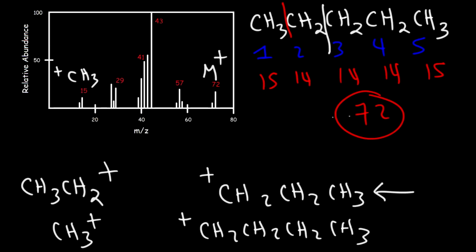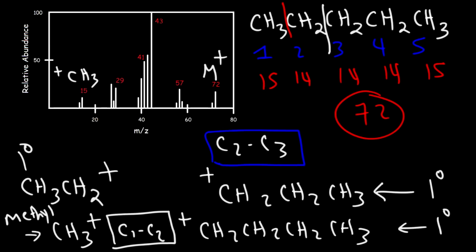In the first scenario where we break the C2-C3 bond, notice that we have a primary ethyl cation and a primary propyl cation. In the second situation where we break the C1-C2 bond, we have a primary butyl cation and a methyl carbocation. A methyl carbocation is less stable than a primary carbocation, which means it's easier to break the C2-C3 bond as opposed to the C1-C2 bond because this will give us more stable fragments, and that's why this is more abundant because it's easier to break the C2-C3 bond.